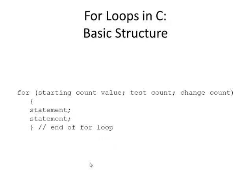A for loop is used when you want to do something a certain number of times. Here's the basic structure: we have the word for, curly braces with the repeated statements, and in the parentheses we specify the starting value, the condition or test — what is the ending value — and then how we want to change the count. We'll typically just add one each time, so we'll keep it simple.